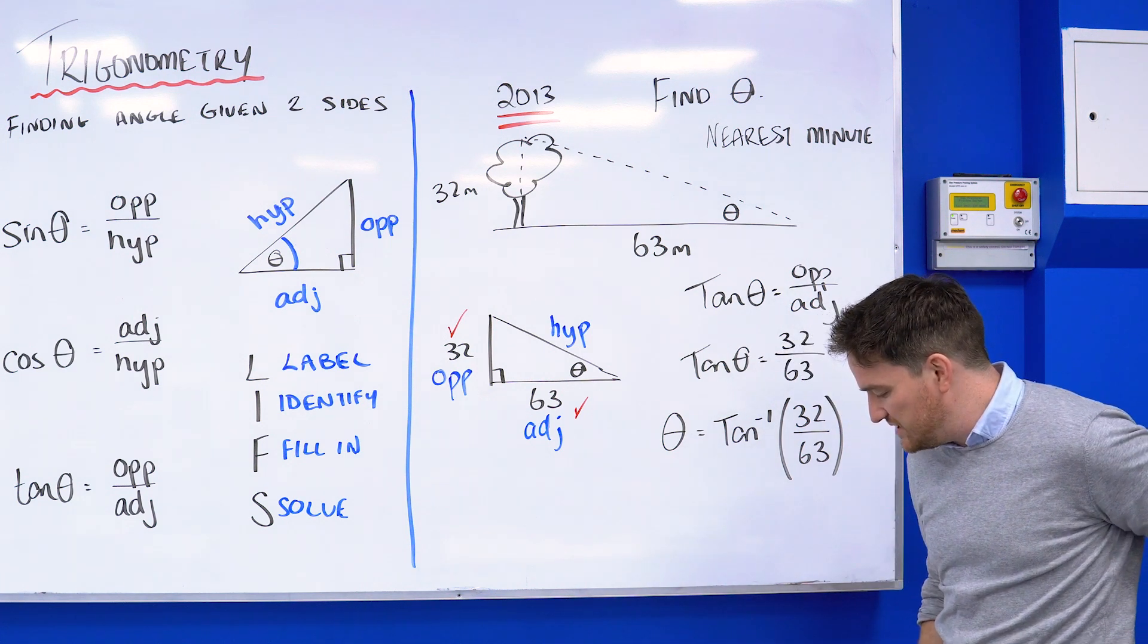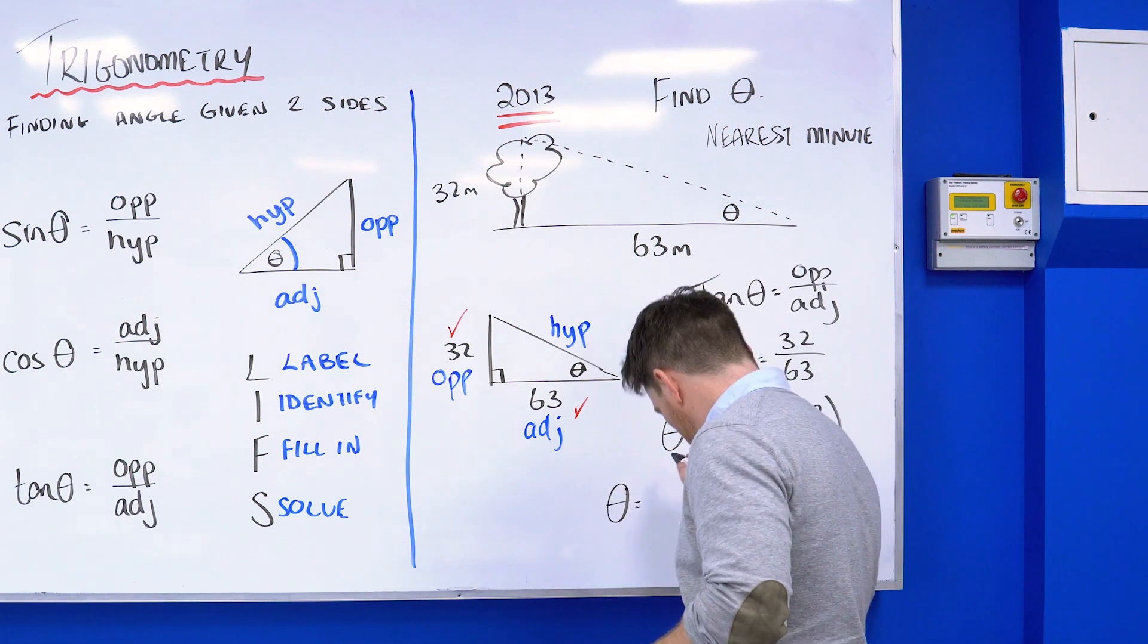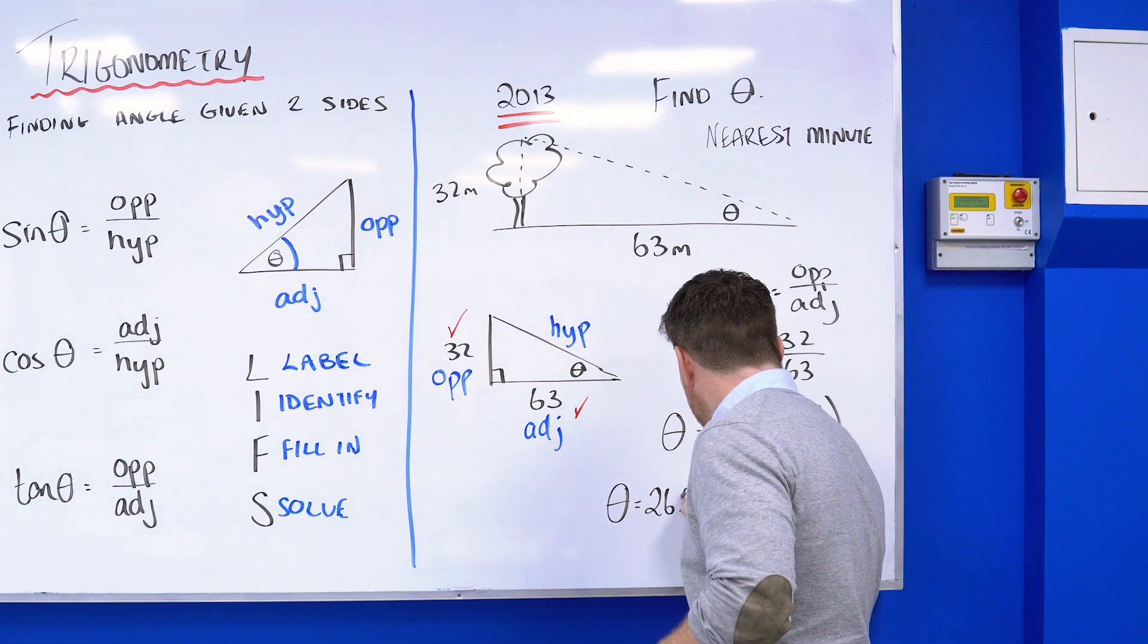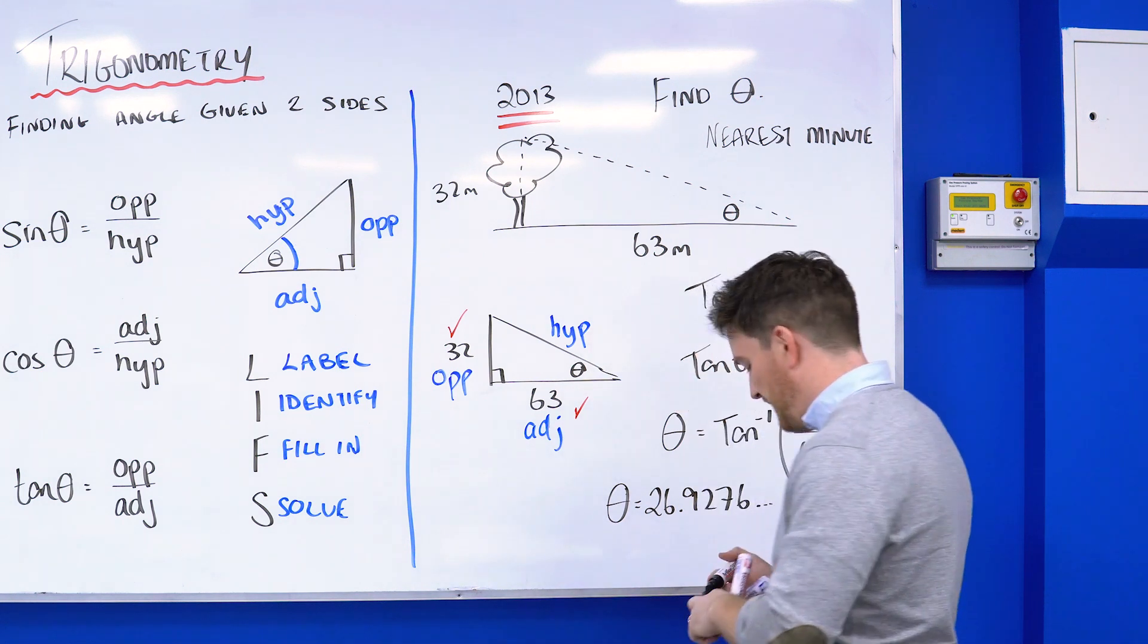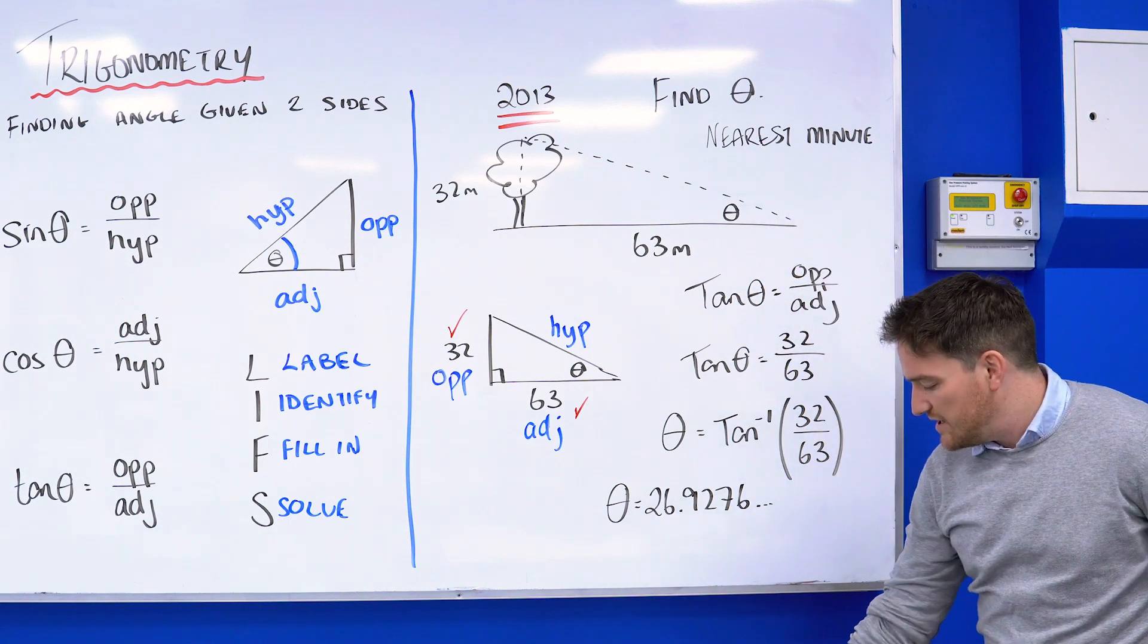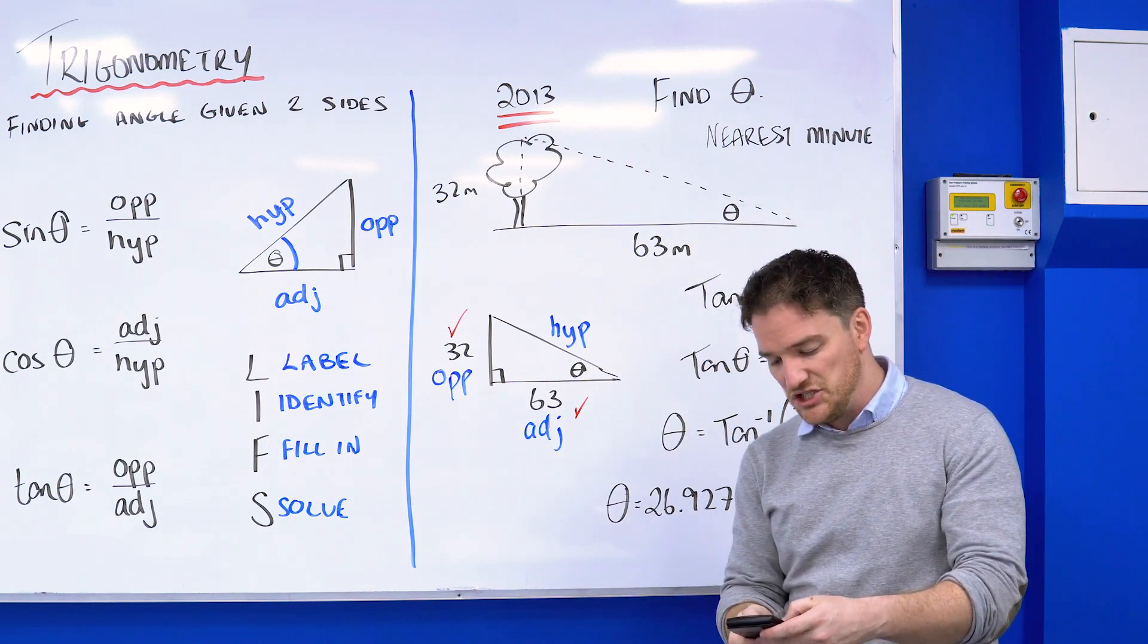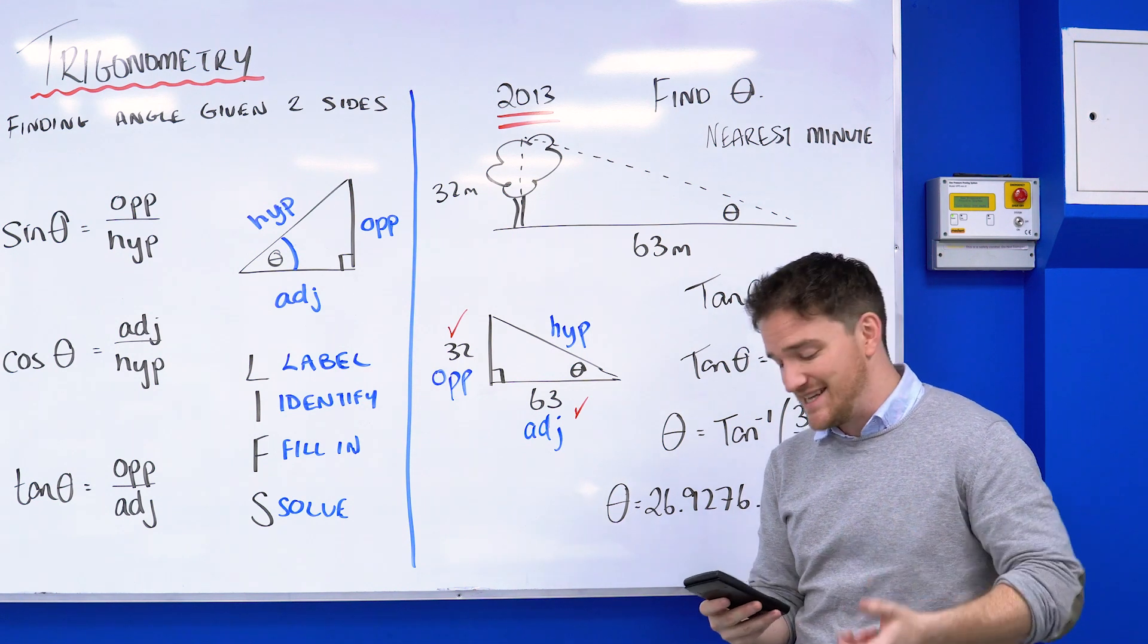Now I'm almost done, but this question asked for the nearest minute, so what I'll do is hit the change button to DMS, which turns it to degrees, minutes, and seconds. It'll spit it out in your calculator if you hit second function in that button.